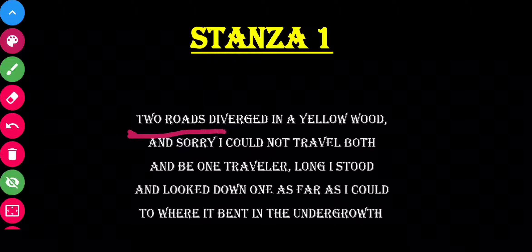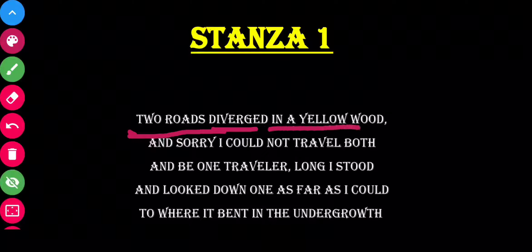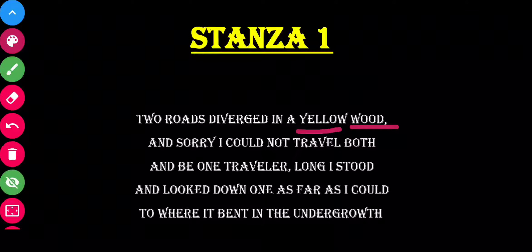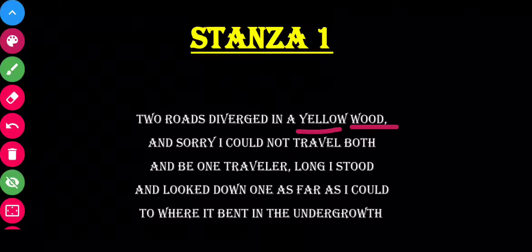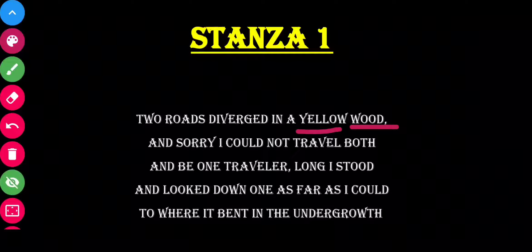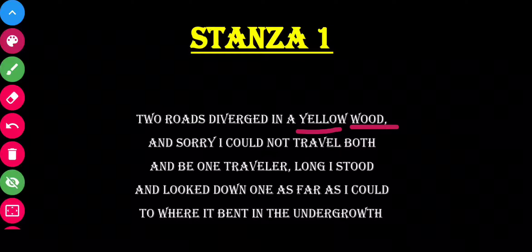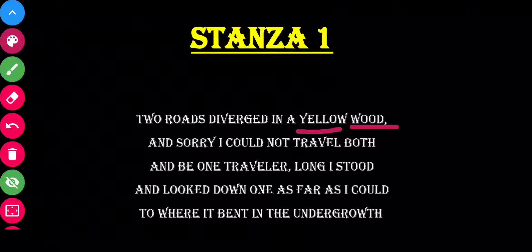Two roads diverged — 'diverged' means divided — in a yellow wood. 'Wood' means forest. Why yellow? Because when the autumn season comes, the leaves turn yellow, so the forest is completely yellow. It is in the autumn season, in the forest, that the road is divided into two roads.